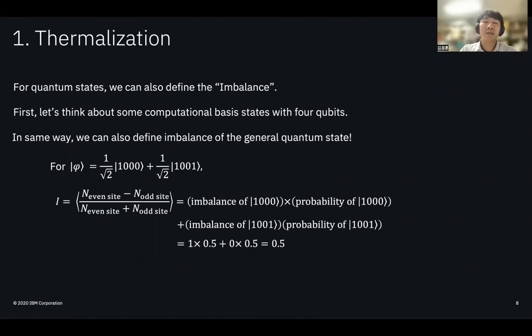Since we can calculate expectation value for some quantities by multiplying each quantity with their probabilities and sum up, we can do the same process on calculating the expectation value of the imbalance. In this case, we can multiply the imbalance of the quantum state |1000⟩ by the probability of state |1000⟩, and add this value for the same with |1001⟩ state. And the final result is 0.5. Now you are ready to solve exercise 3a.